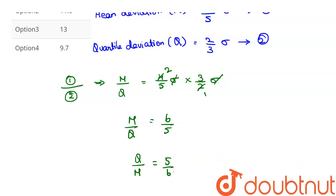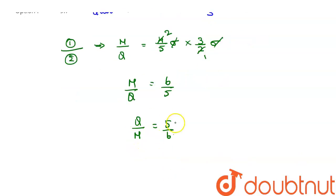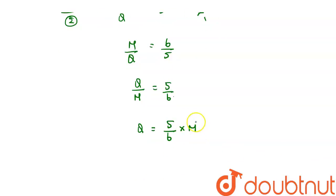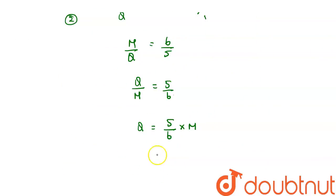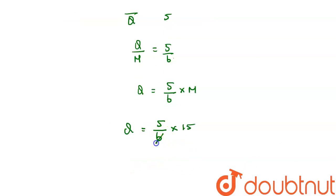Let's take this M to right-hand side, then Q is equal to 5 divided by 6 into M. So M value is 15. Let's substitute that. So Q is equal to 5 divided by 6 into 15.